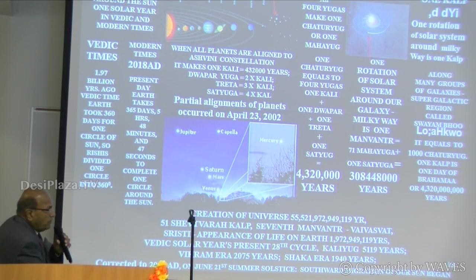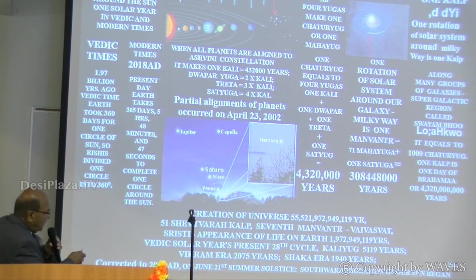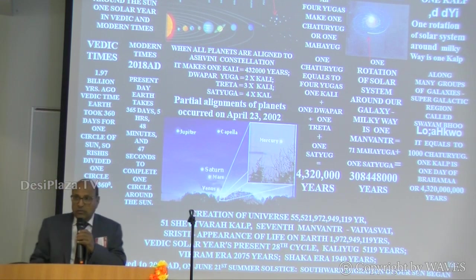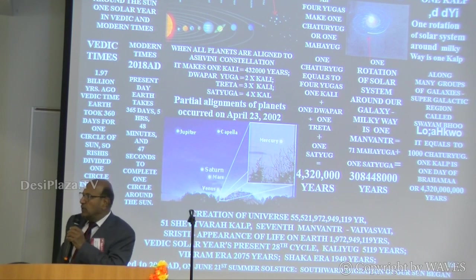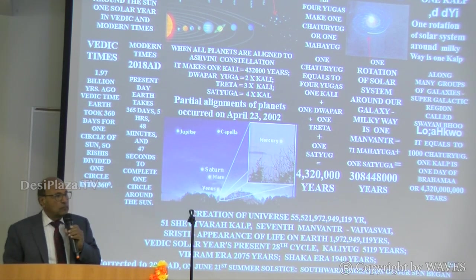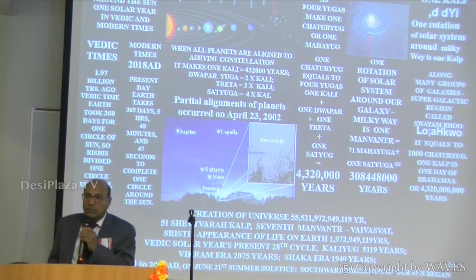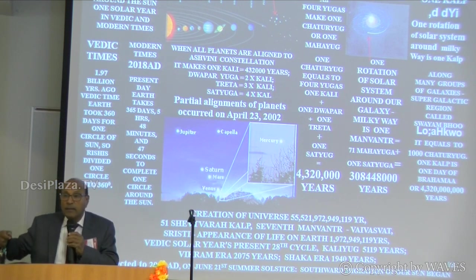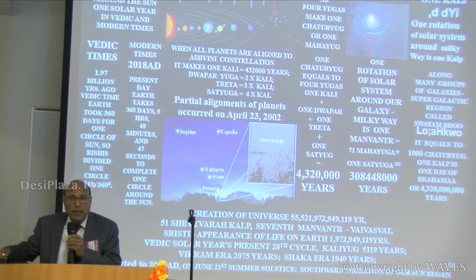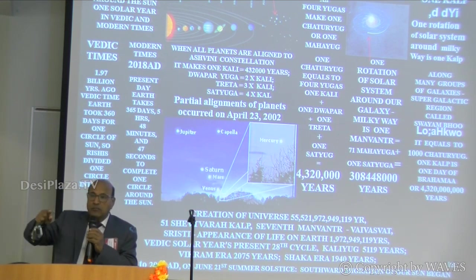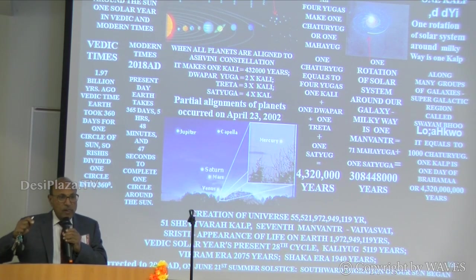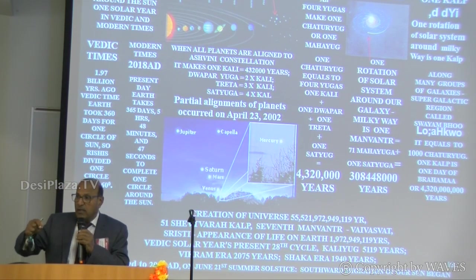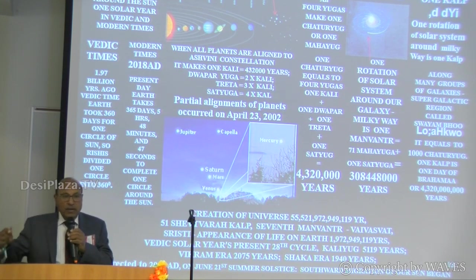This is a very complicated picture, but it is just a summary. Is there anybody who can say why a circle is divided into 360 degrees only? At the Vedic time, Earth used to take 360 days — a full complete circle. That's why the circle is still divided by 360 degrees.